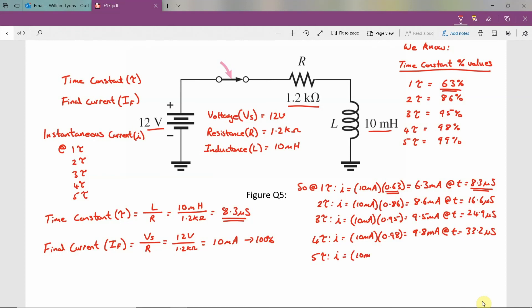the instantaneous current I is equal to 10 milliamps multiplied by 0.99, which results in 9.9 milliamps at a time equal to 41.5 microseconds.